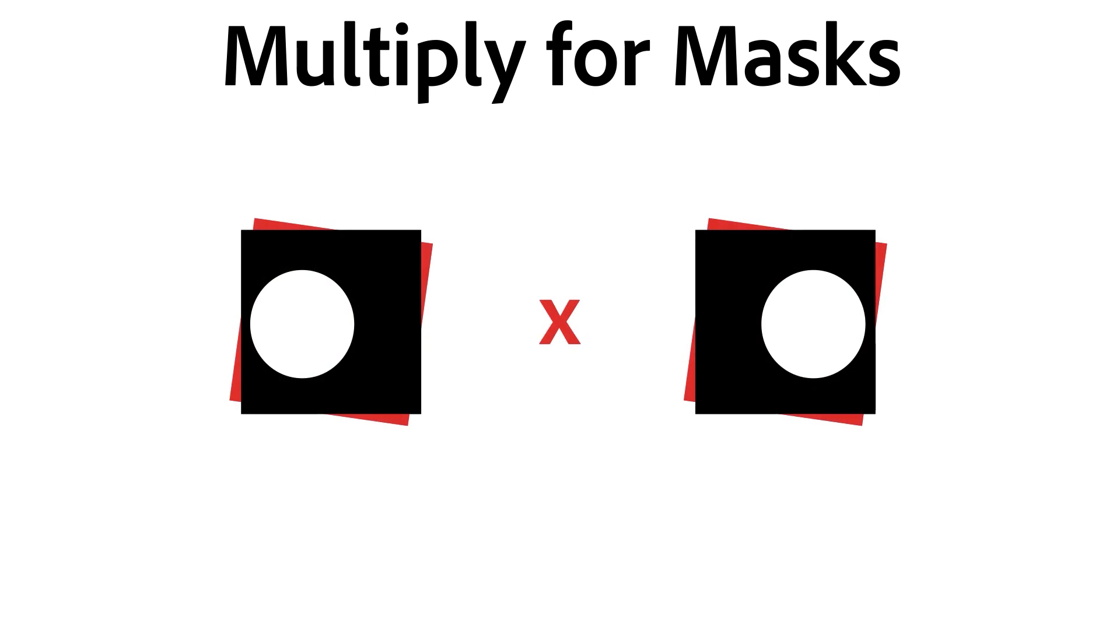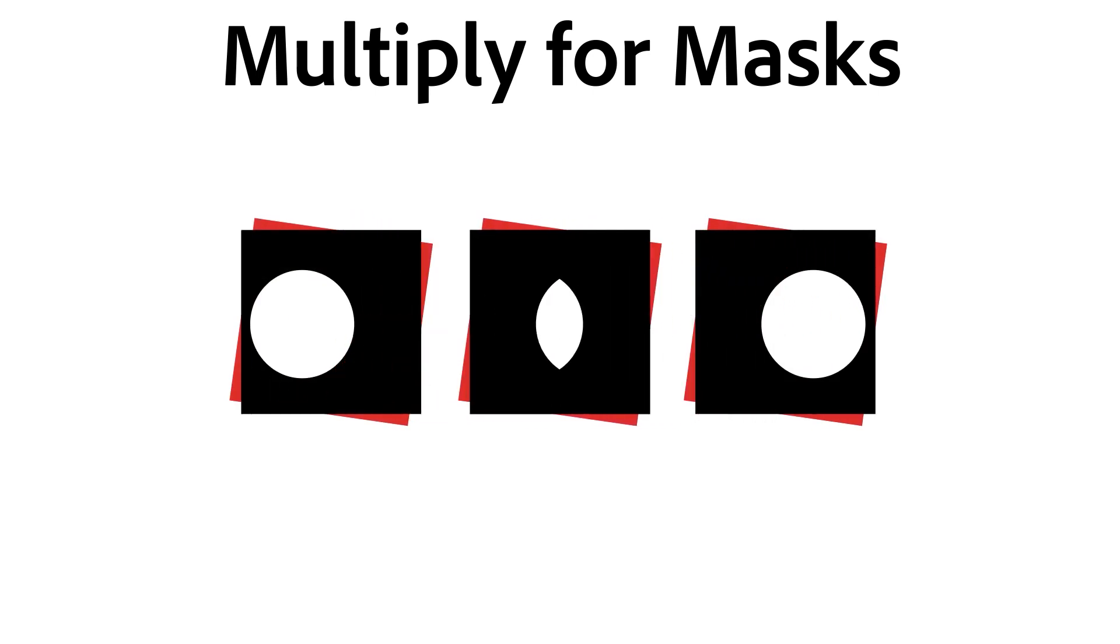best way to think of multiply is as a union or AND masking operation. For white areas, that means if an area is white in both top and bottom component, it will be white in the result. If either top or bottom are black, the area will be black in the final result.